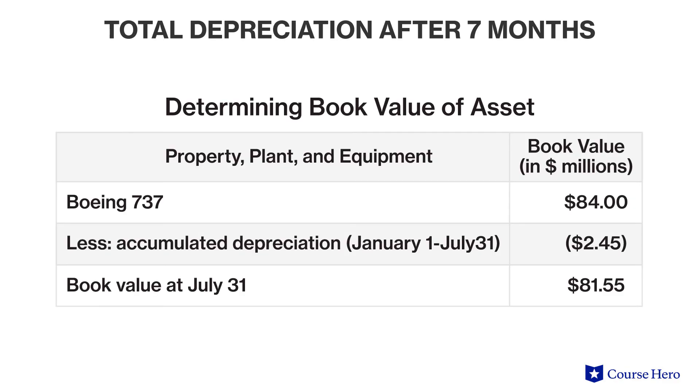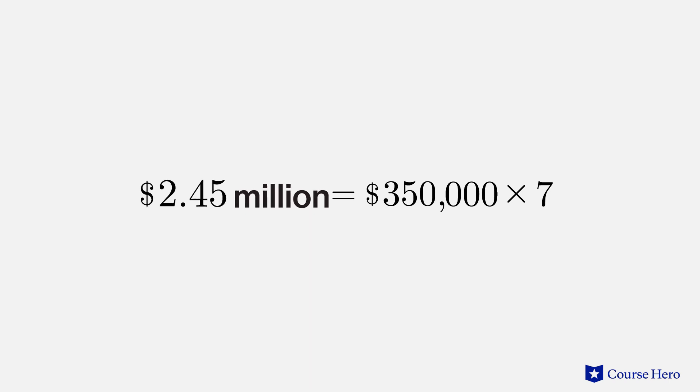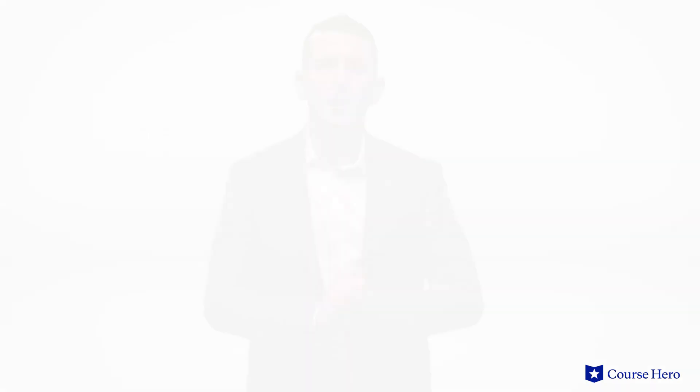After seven months of depreciation, the Boeing 737's total depreciation expense is $2.45 million — that is, $350,000 times seven equals $2.45 million. The Boeing 737's book value, the cost of the asset after its accumulated depreciation is subtracted, will be $81,550,000: $84 million minus $2,450,000.